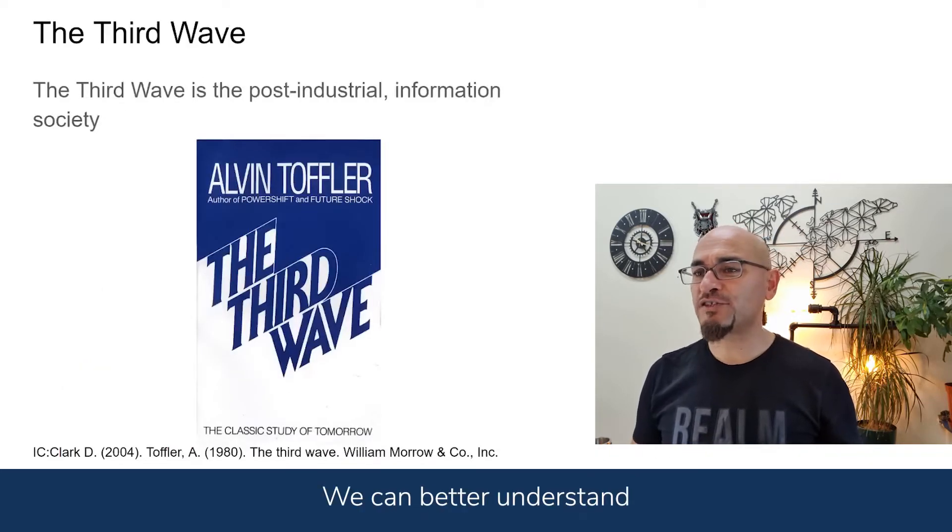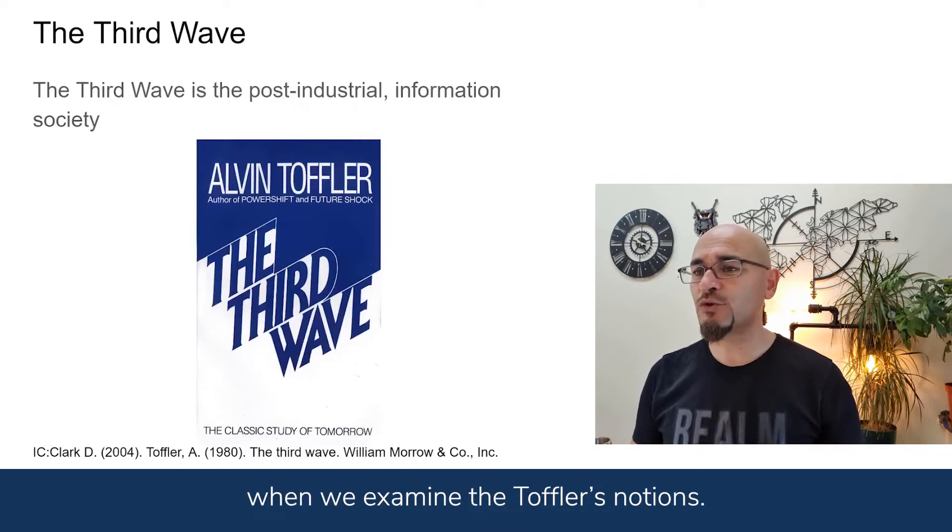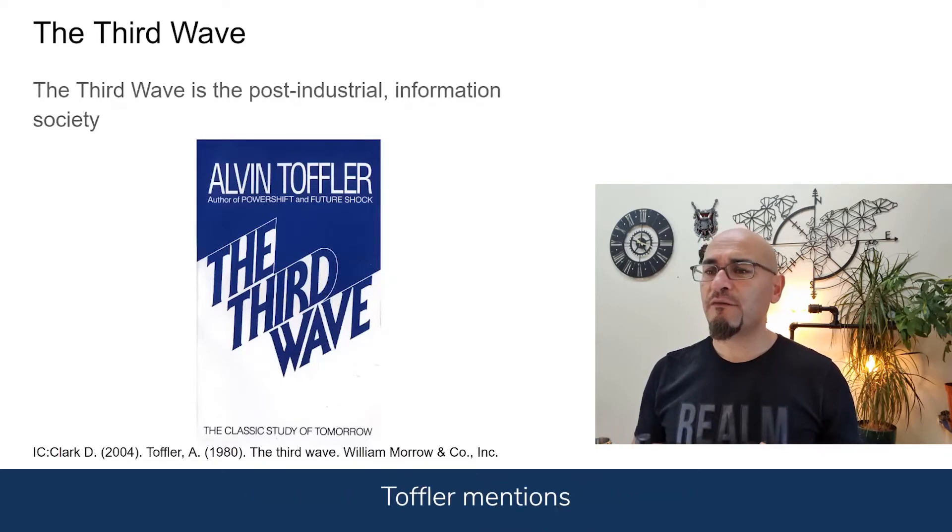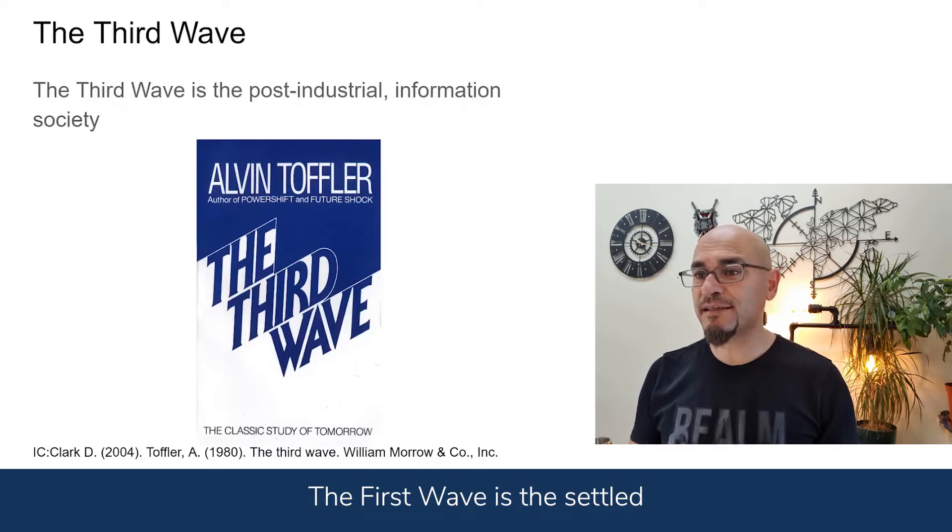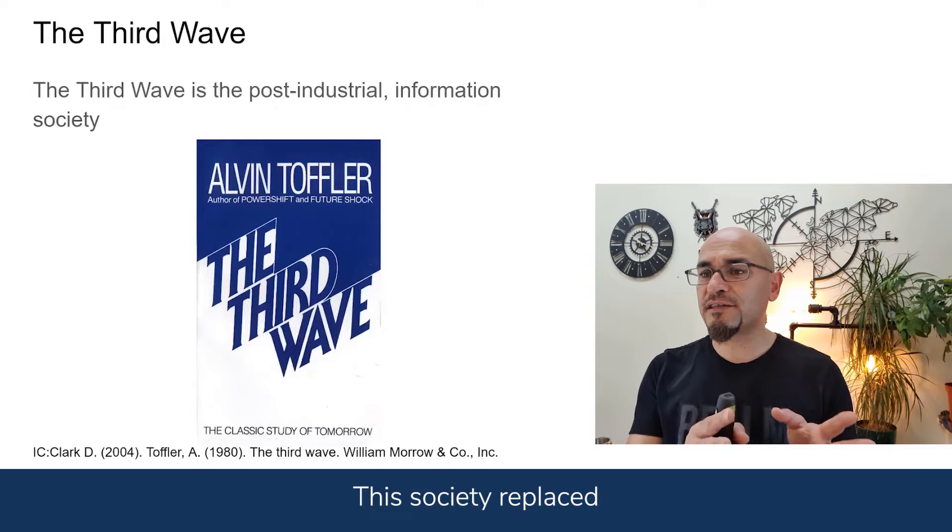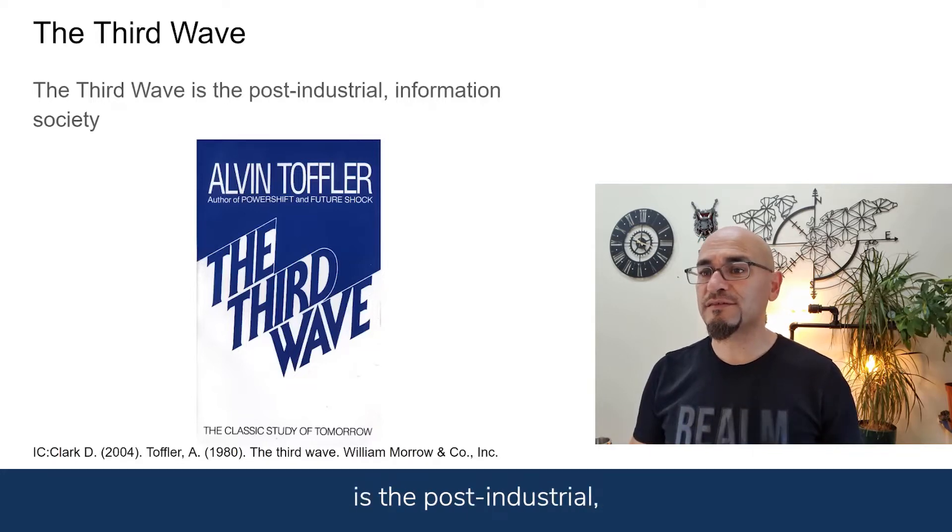We can better understand the value of information and information society when we examine Toffler's notions. Toffler mentions three types of waves that deeply affect societies. The first wave is the Settled Agricultural Society that replaced hunter-gatherer cultures. The second wave is Industrial Age Society, and the third wave is the Post-Industrial information society.